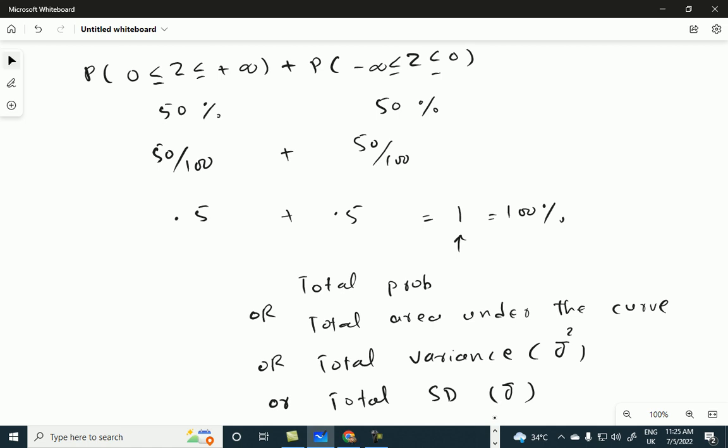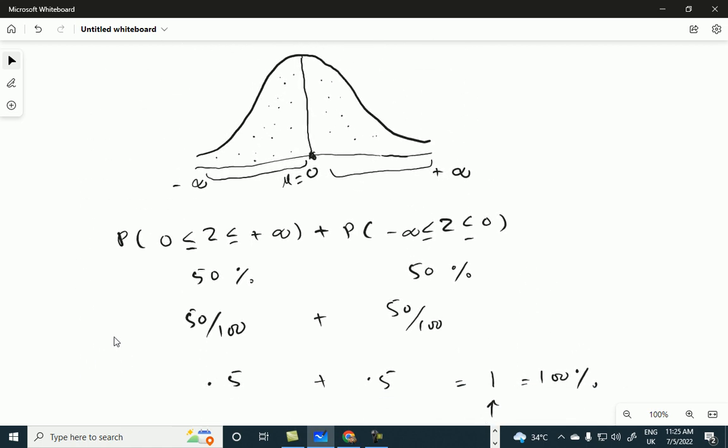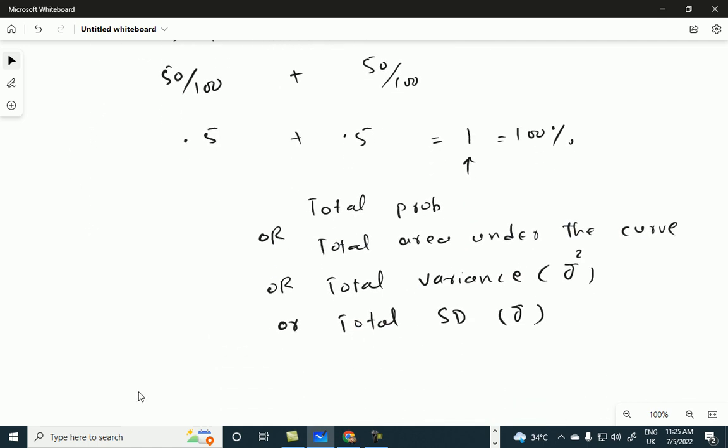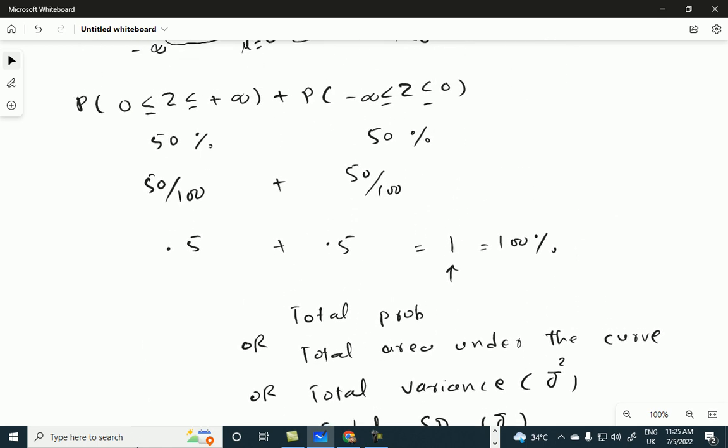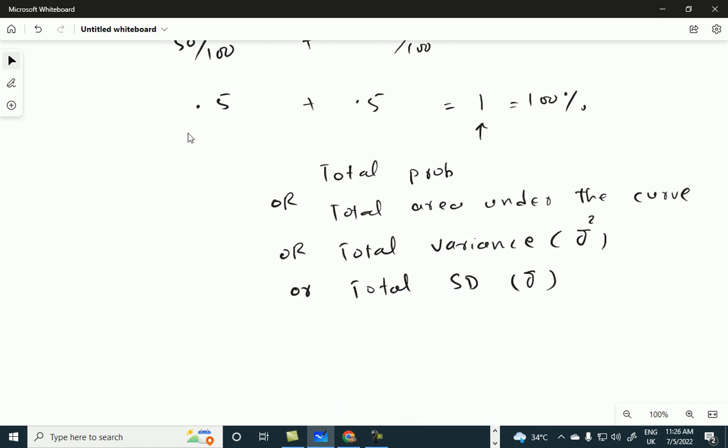Okay, so now this is standard normal distribution, and you can convert any normally distributed variable to standard normal distribution by a certain equation, which is a property of the sampling distribution of sample mean. So this is all about the standard normal distribution.